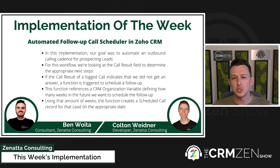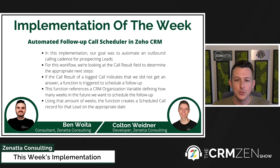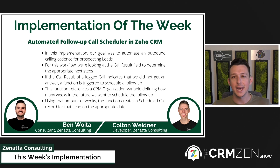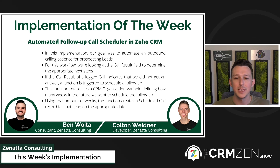Here we're essentially using the ever-useful call result field that you can fill in when you close out a call through the CRM, to decide the appropriate next steps. This function is essentially saying that if a call result is logged as 'left voicemail' — or a couple of different options that basically mean we didn't reach them — then a function is triggered that will schedule a follow-up.